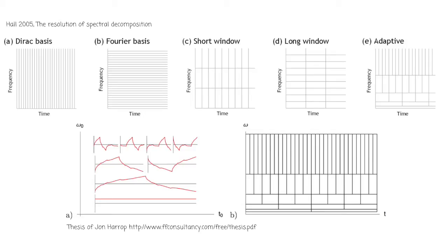So the tiling reflects what essentially what we're sort of allowed to know, if you like, about the signal. So in the regular time domain, we're in what's known as a Dirac basis, where we have perfect sort of time clarity.